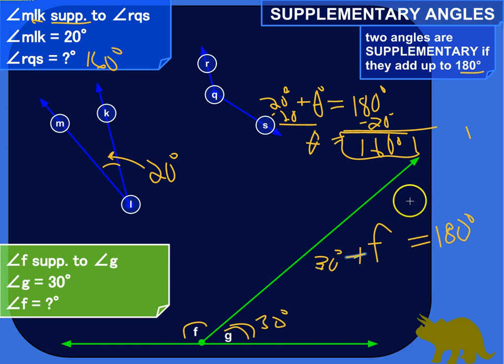We could eyeball that and say 30 plus what is equal to 180? 30 plus 150 is equal to 180? Or we just follow the rules of algebra. Don't have to think about it too much. We're adding 30. So we just subtract 30 to get rid of that. We've got F by itself over here.